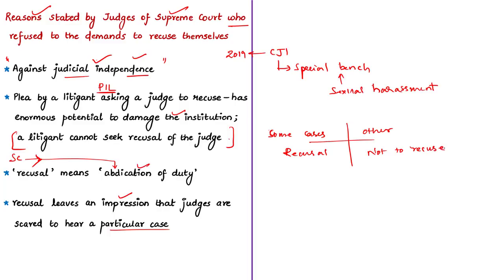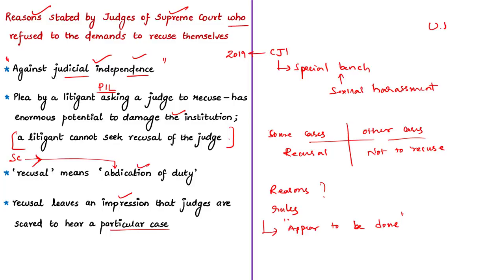From these examples, we understand that in some circumstances recusal is required to serve the ends of justice and equity, while in others judges are expected not to recuse. There are also reasonable demands to mention reasons for a judge's recusal. Comprehensive rules are needed to address all circumstances regarding recusal of judges — that will be a starting point to ensure that justice is not only done but also appears to have been done.